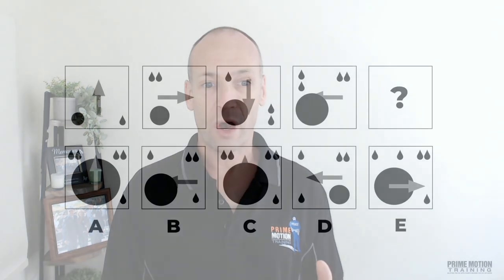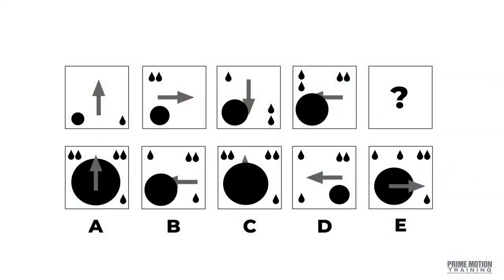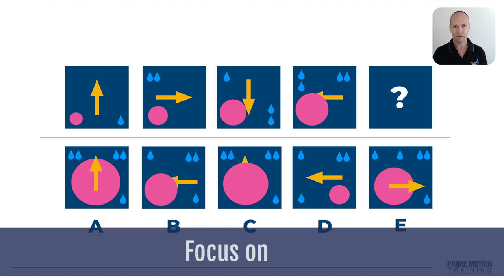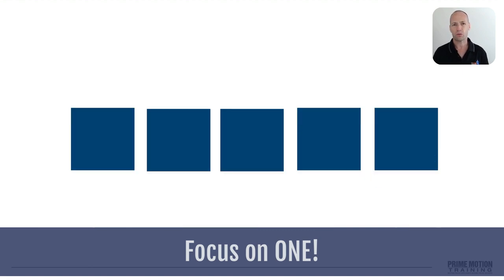Now, of course, black and white is less easy to work with than if the individual components in the boxes were coloured. So if I change them to coloured now, you can see quite clearly we've got a yellow arrow, or an orange arrow, a pink spot and these little blue droplets. So what you need to do is focus on just one of those elements and follow it through to completion from left through to right and see if you can identify what's happening.